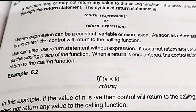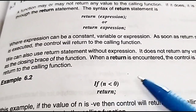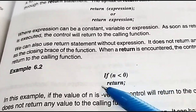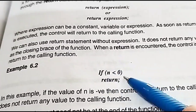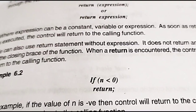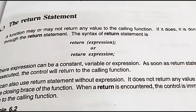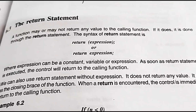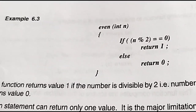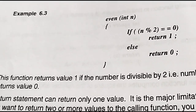We can use the returned value as we wish. There can be n number of return statements in a function. For example, a function can have two return statements: the first when a number is divisible by 2 (even), and the second for when it is an odd number.